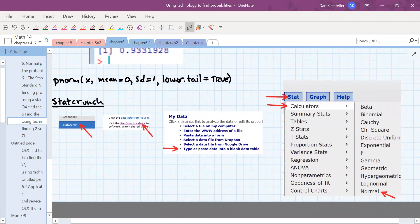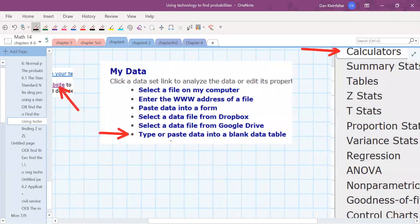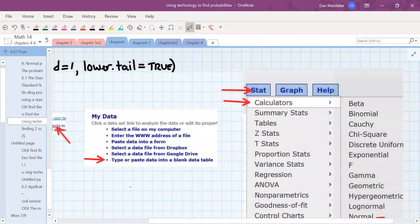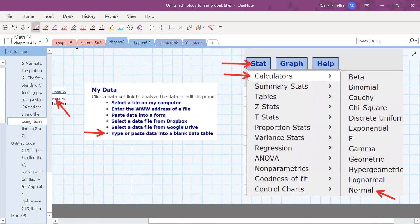If you wish to use StatCrunch, of course click on StatCrunch, StatCrunch website, and then you'll need a blank data table, stat, then calculators, and then normal. And then there will be a menu you use to put in the particular Z that you want.